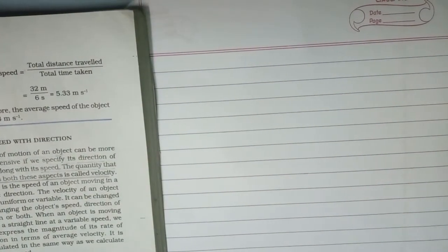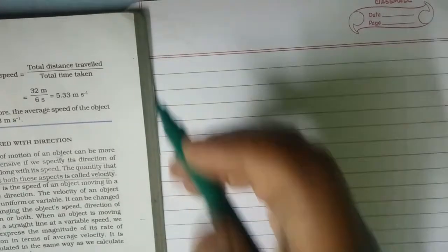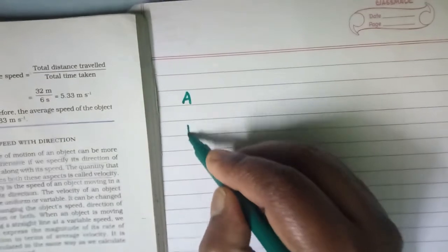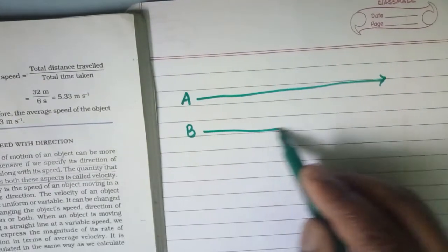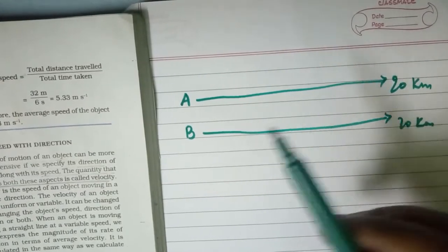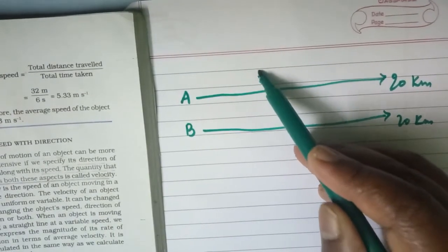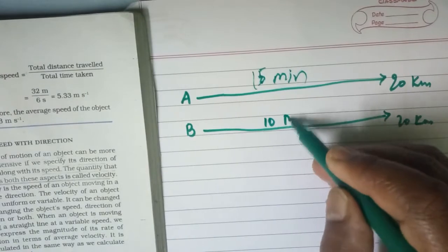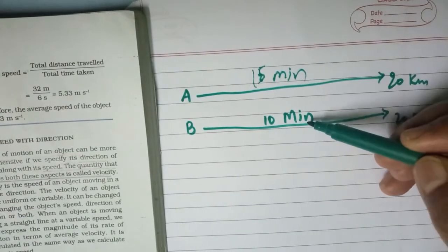Now let us try to know the rate of measuring of motion. For example, if you have two vehicles — vehicle A and vehicle B — both cover the same distance of 20 kilometers, but vehicle A takes 15 minutes and vehicle B covers it within 10 minutes. The distance covered is the same but the time taken is different.